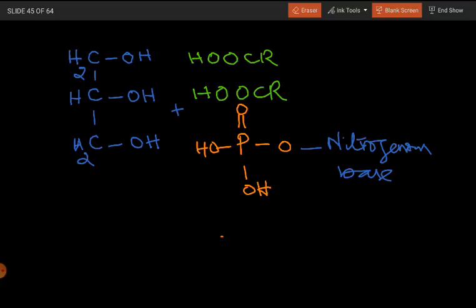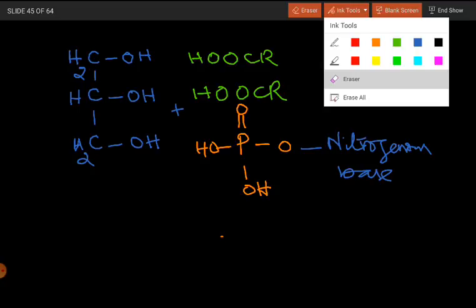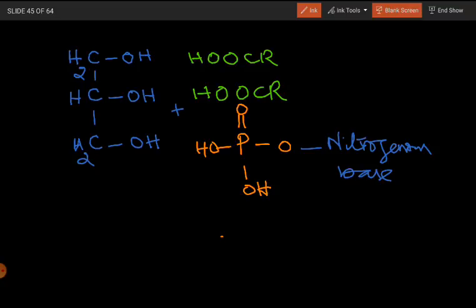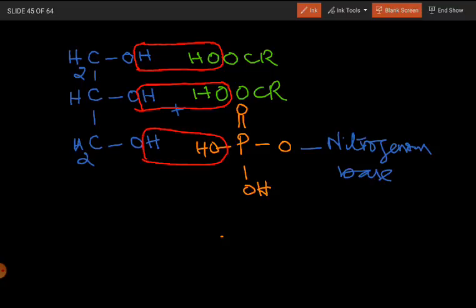These are four components of our phospholipids. Now the bonding is produced between them — the hydroxyl group of the alcohol and the hydroxyl of the fatty acids react. This is the same for the second and third positions. Three water molecules are released in this condensation reaction.